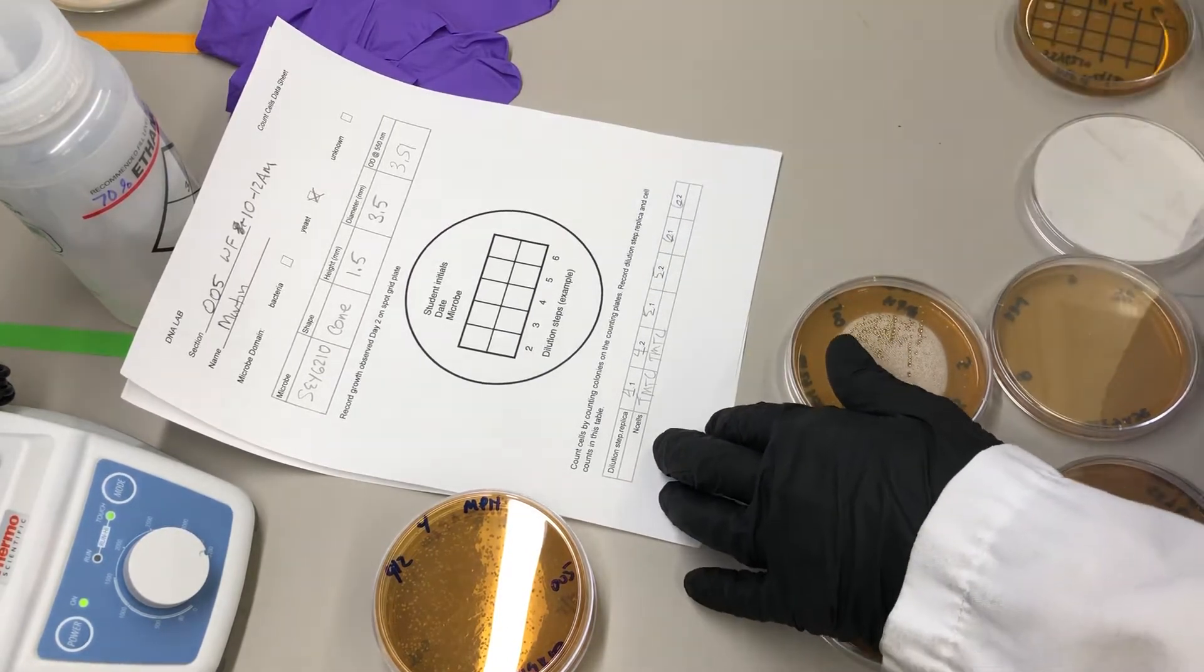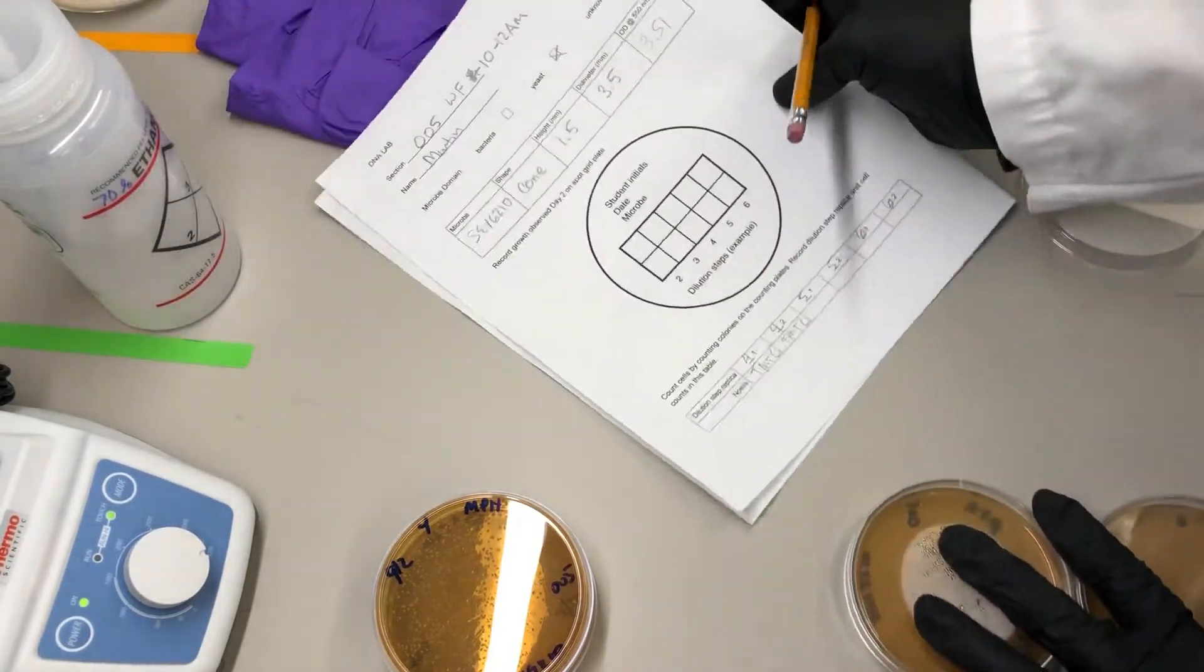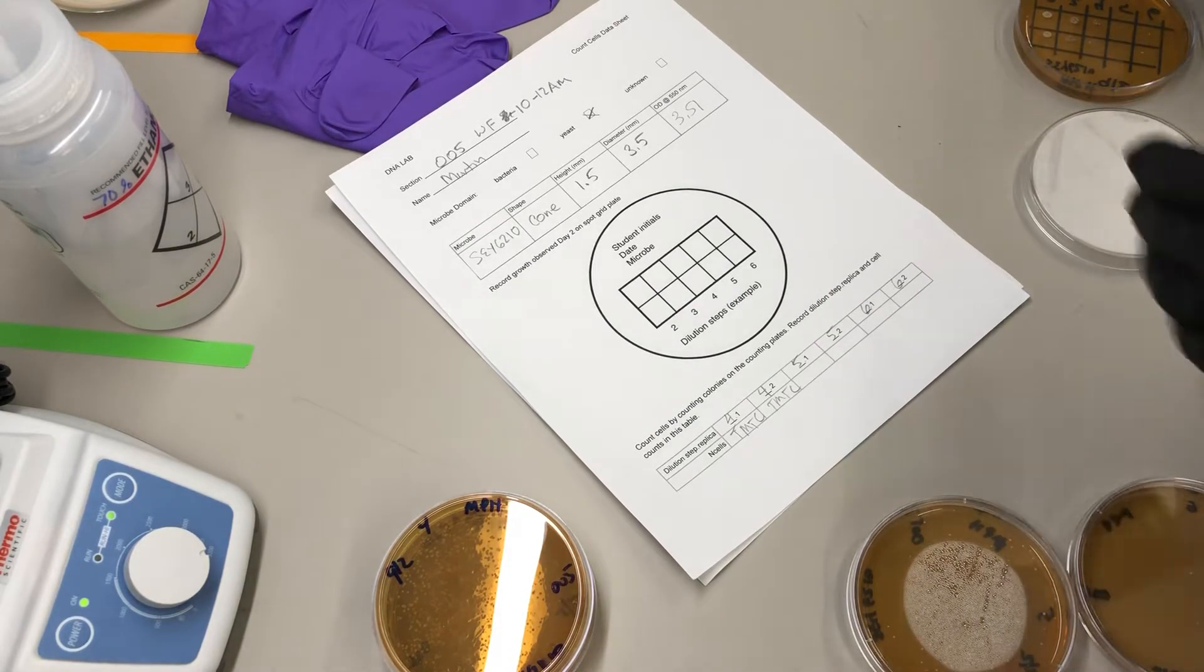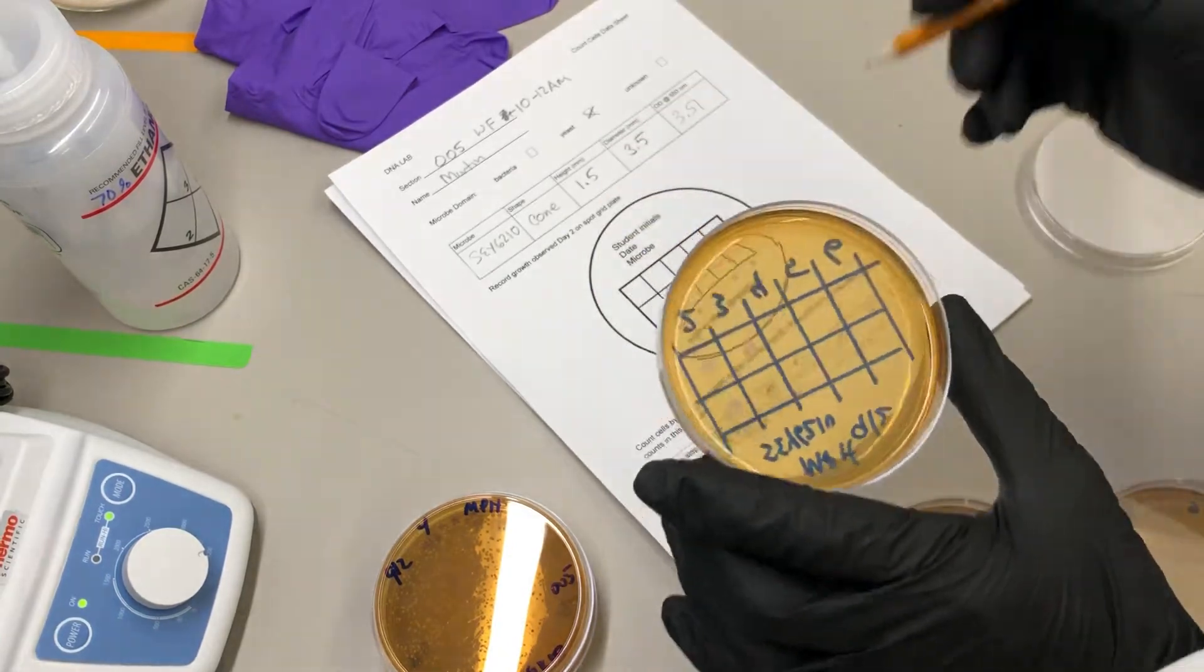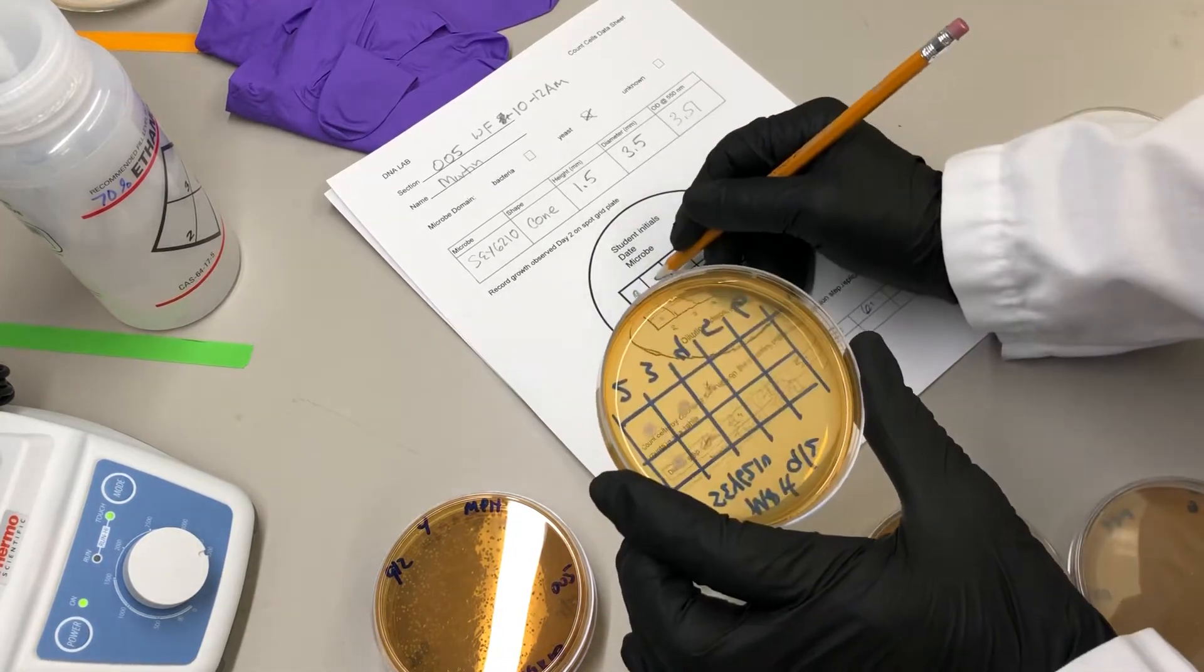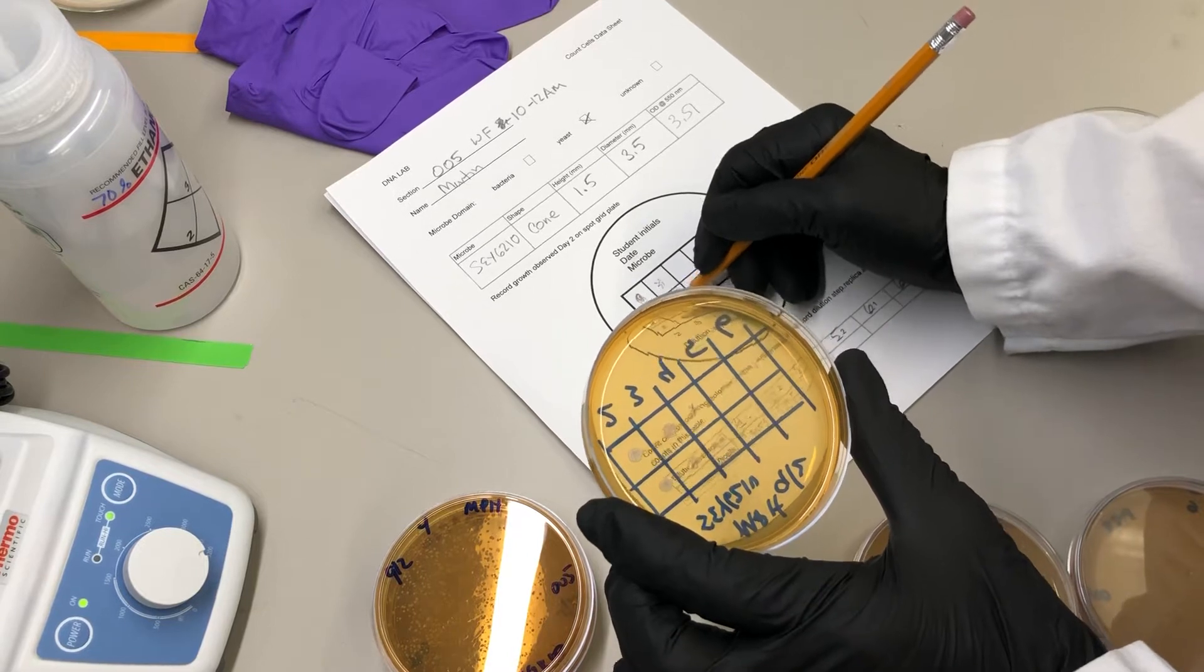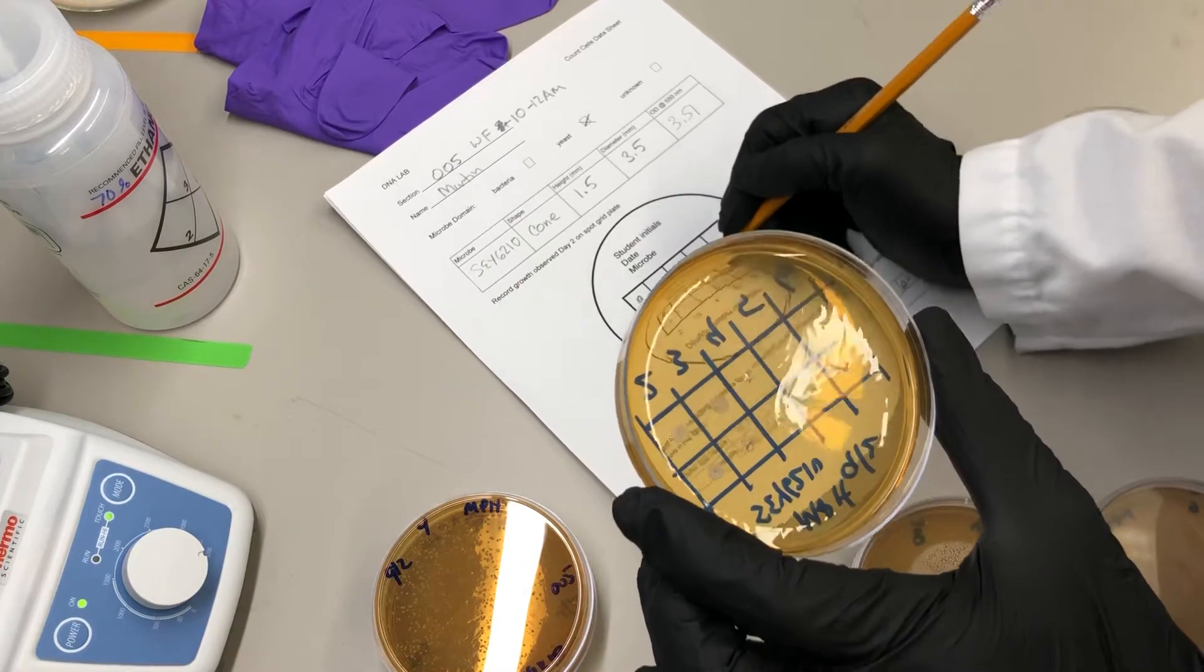So that's how this table works, but first I want to do something with the spot grid plate. I want to kind of take a look at what I see on here, and I'm just going to fill in, you know, dense growth, dense growth here at step two, kind of like more spotty, but still a lot of colonies on step three, and then just maybe one, two, three, four here.